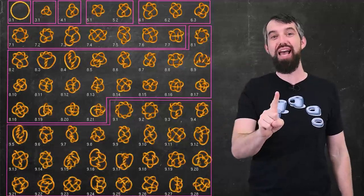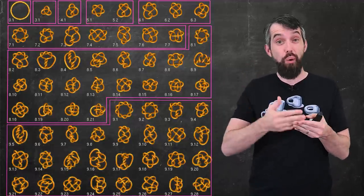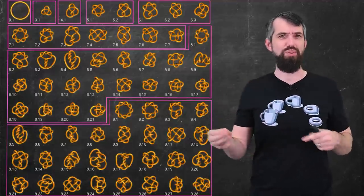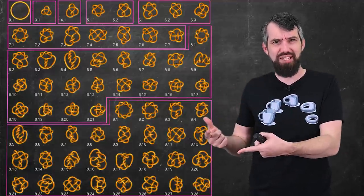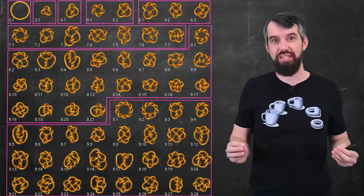There's only one knot that has three crossings, that's the trefoil. But as you go up in the number of crossings, there's more and more knots that are actually distinct from each other. For example, knots with 23 crossings, there's actually over a hundred billion possible examples of just 23 crossings.